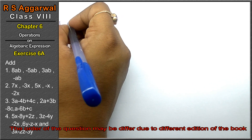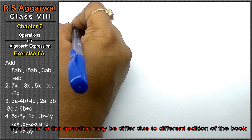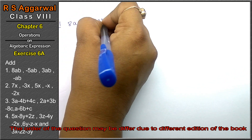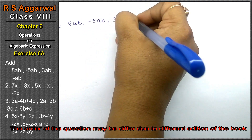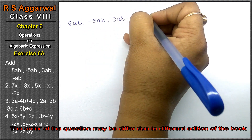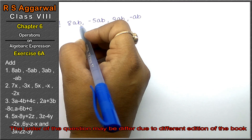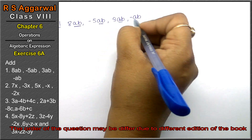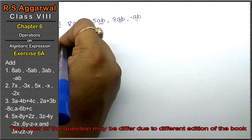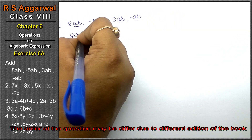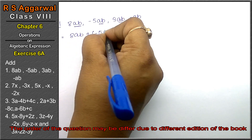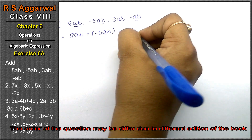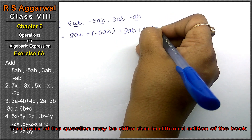Question number 1 is: add 8ab, minus 5ab, 3ab, and minus ab. Looking at the variable ab in each term, we write: 8ab plus minus 5ab plus 3ab plus minus ab.